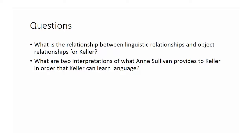So what are the two interpretations of what Ann Sullivan provides to Keller in order for Keller to learn language? One interpretation is that language needs to be taught. The other is that language is innate — you don't need a teacher; it just comes because you're human. As long as you're with other humans, you'll develop language without being explicitly taught. Those are two ways of thinking about Helen Keller's experience.